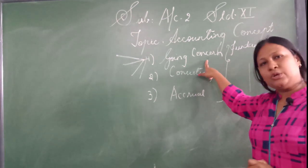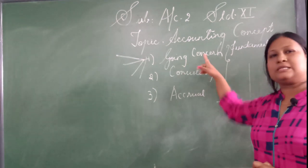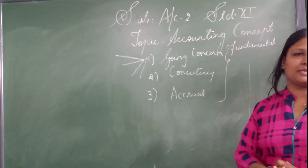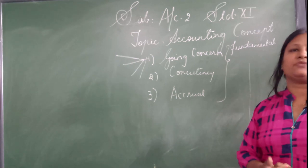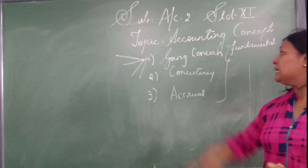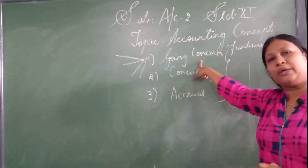Clear with this concept? So basic example in this is we charge depreciation on fixed assets, we pay expenses in advance, we pay deferred revenue expenditures. They are based on this concept, going concern.